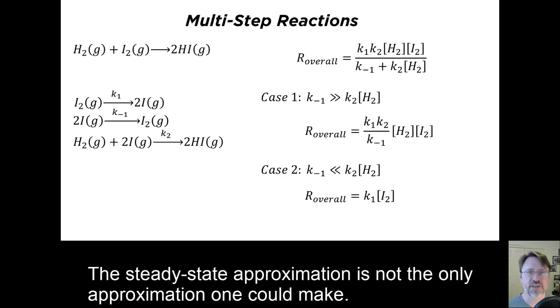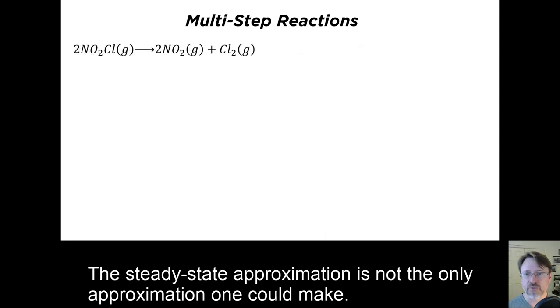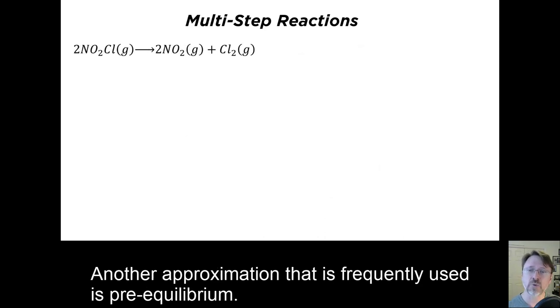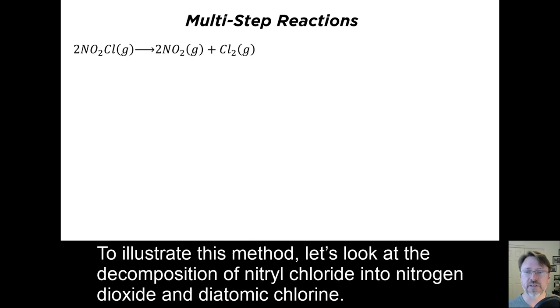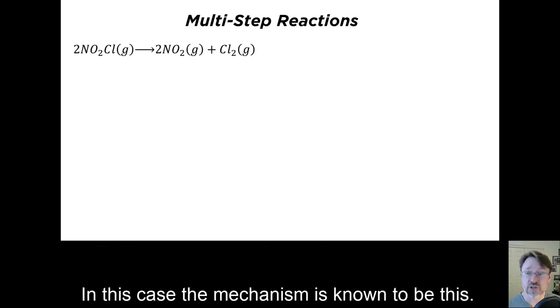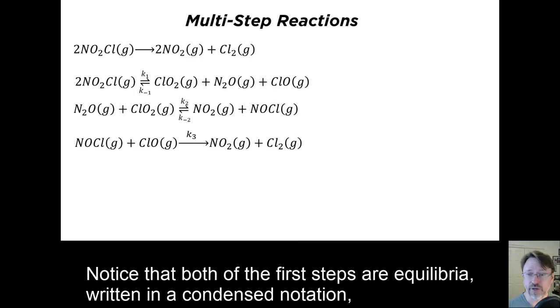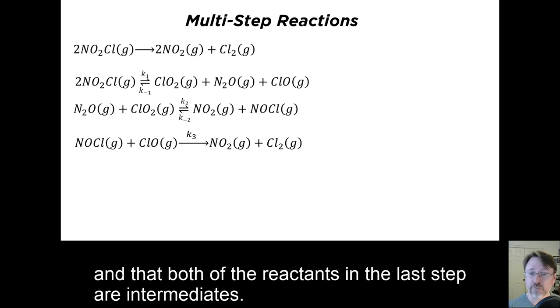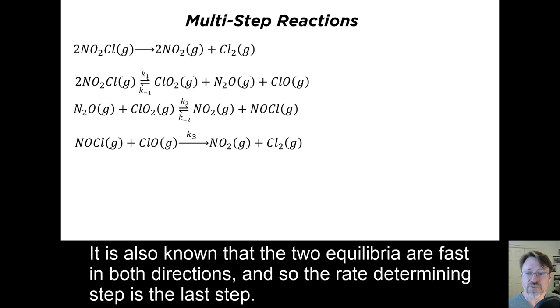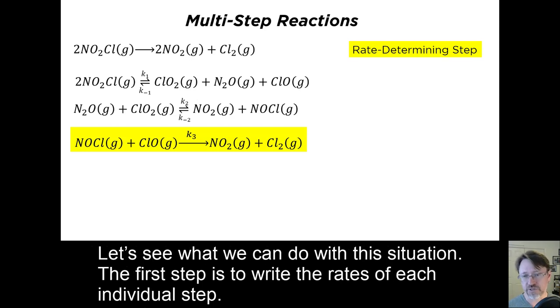The steady-state approximation is not the only approximation one could make. Another approximation that is frequently used is pre-equilibrium. To illustrate this method, let's look at the decomposition of nitrile chloride into nitrogen dioxide and diatomic chlorine. In this case, the mechanism is known to be this. Notice that both of the first steps are equilibria, written in a condensed notation, and that both of the reactants in the last step are intermediates. It is also known that the two equilibria are fast in both directions, so the rate-determining step is the last step. Let's see what we can do with this situation.